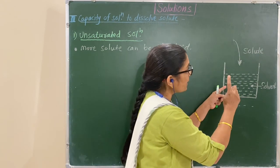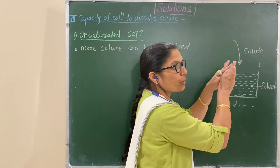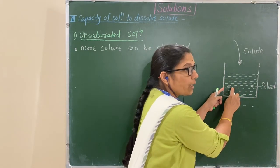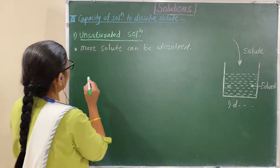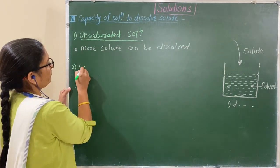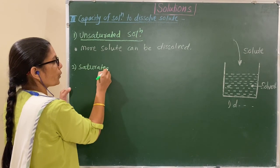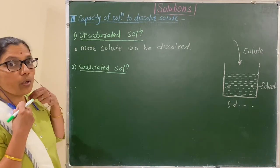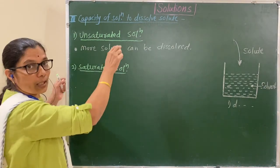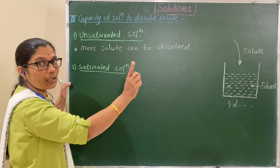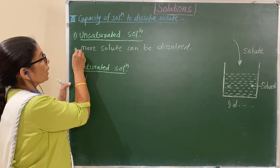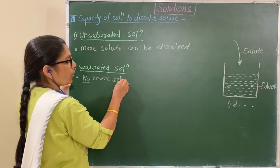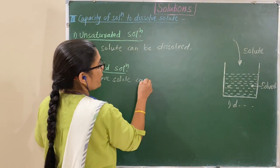Now, once that limit is reached, at that point dissolution stops. That solution is called a saturated solution. Saturated solution means no more solute can be dissolved in the solution. No more solute can be dissolved.